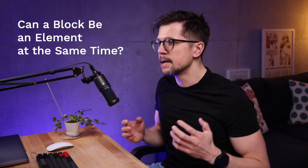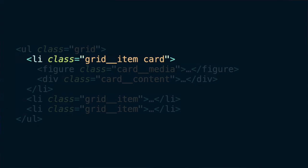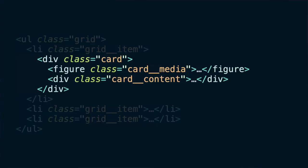Can a block be an element at the same time? Yes. For example, each grid item can also be a card. Should you combine a block and an element class on the same node? I don't do this very often because we're rarely writing plain HTML — usually we're working within a CMS or React framework where the card would be its own component. Combining them can cause styles from the grid item to bleed into a component, creating frustration. I prefer to separate them and ensure the card sits on its own node.